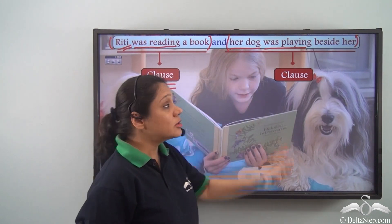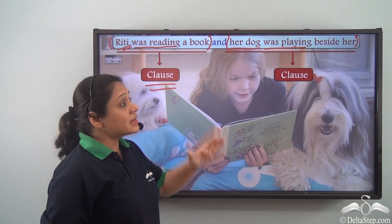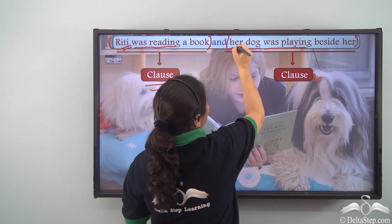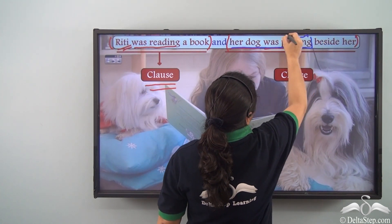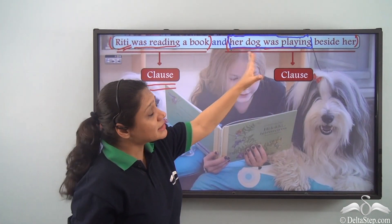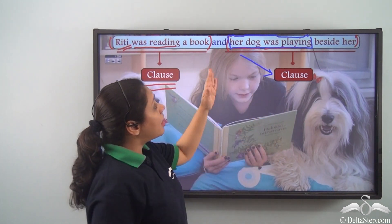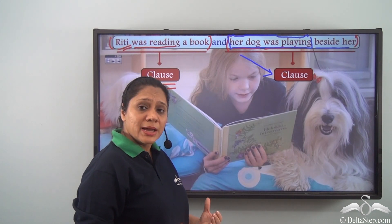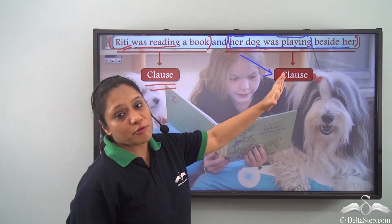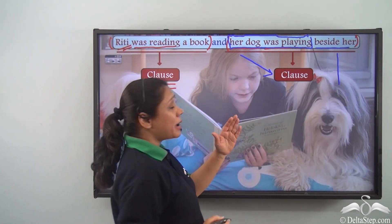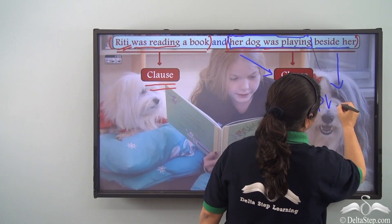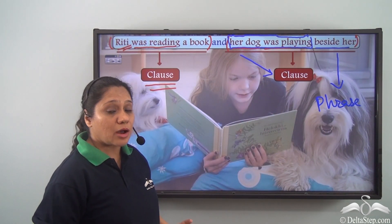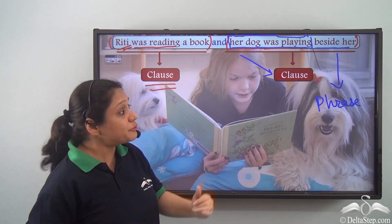Her dog was playing beside her can also stand alone as a complete sentence, so this part is also a clause. Now if you read this part carefully, you will realize that this clause can be further broken down as her dog was playing — another clause that makes complete sense — and the remaining part beside her, which has no subject doing a verb and is conveying only some sense. This group of words is acting as an adverb, telling us where the dog was playing. So beside her is a phrase.